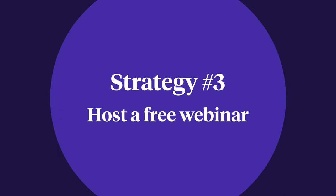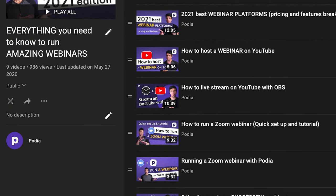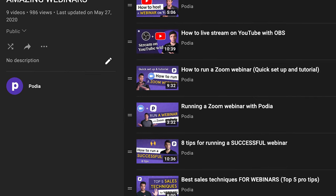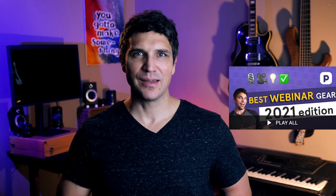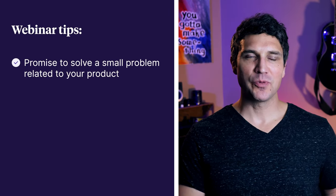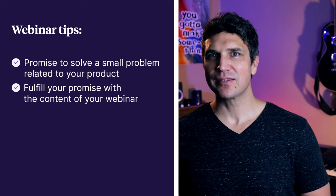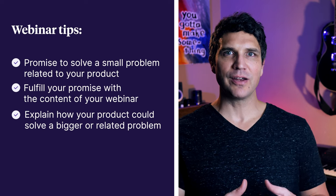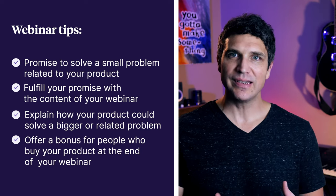Strategy number three: host a free webinar. Webinars are a fun and engaging way to sell your digital product — similar to email marketing in that you typically offer some kind of free value to get people to show up, then use the webinar as a live sales funnel, encouraging attendees to buy your product by the end of the session. Remember these tips: get people to attend by promising to solve a small problem related to your product; be sure to fulfill that promise with your webinar content; explain how your product could solve a bigger or related problem; and consider offering a bonus or deal to people who buy within a certain window. Bonus tip: pre-recorded webinars can be just as useful as a sales tool or even as a standalone digital product.